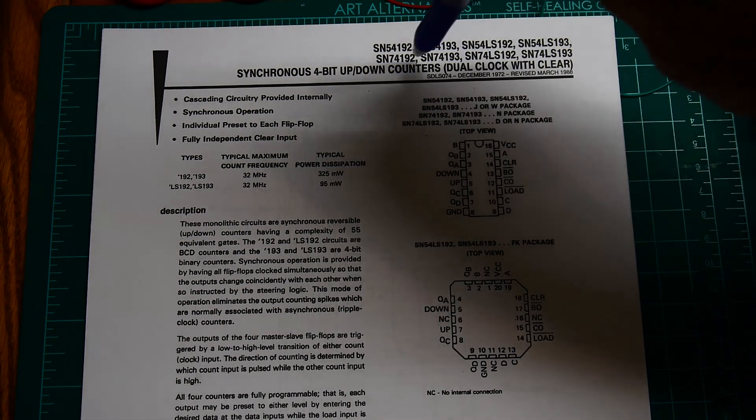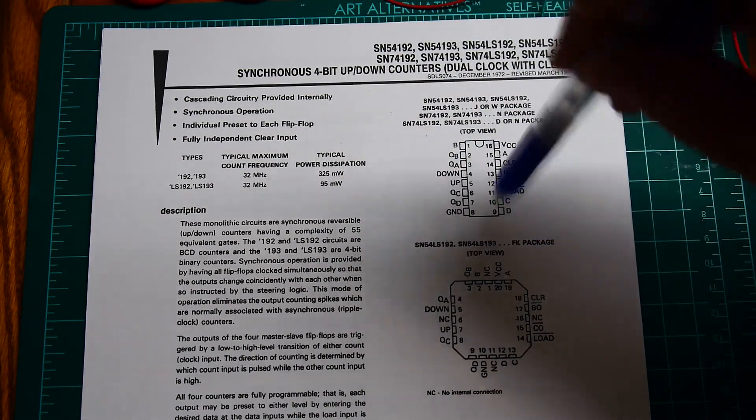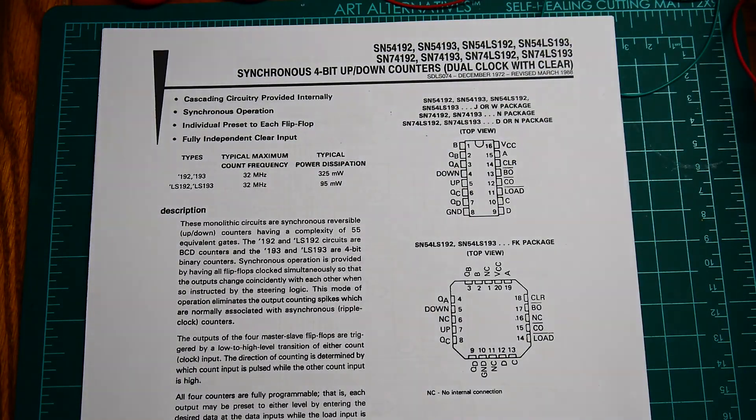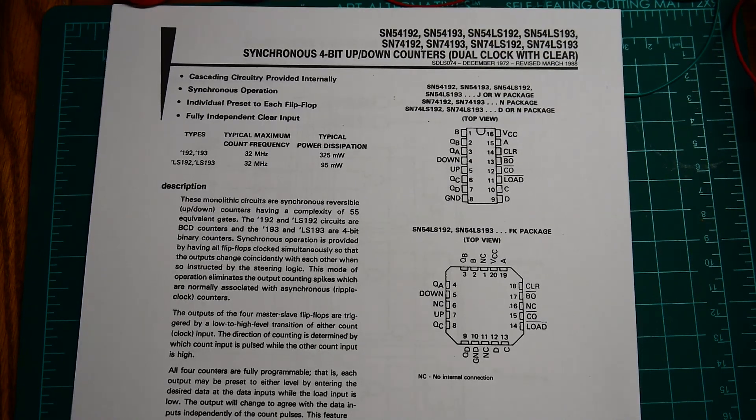The 192 is a decade counter, the 193 is a binary counter, so it counts 0 through 15. We'll need two of them to count to 8 bits and let's take a look at the functionality.